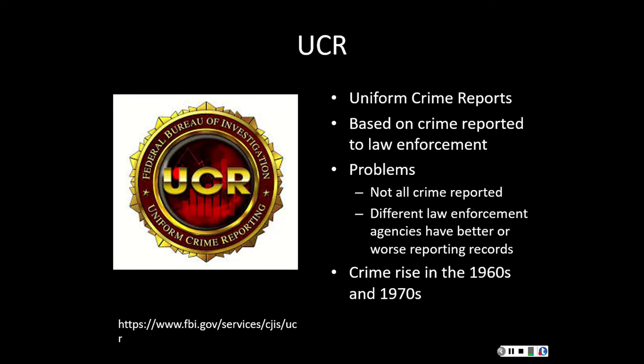By and large, there are two systems used to measure crime. The first is the UCR — the Uniform Crime Reports. This is data collected by the FBI, and it's based on crime reported by law enforcement. It's broken down into violent and nonviolent crimes, and the crime rates are expressed in rates per 100,000 people, which makes them somewhat more meaningful. It's the most widely used number, because reporting to law enforcement is probably the most reliable source that we have regarding crime.